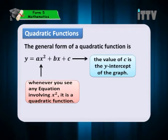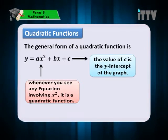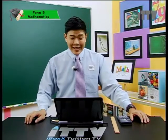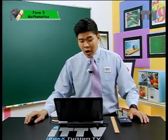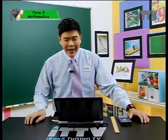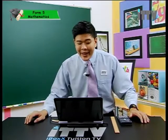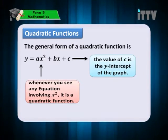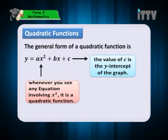The general form of a quadratic function has the highest power of x as 2. Now, what are a, b, and c? They are coefficients. Remember that in a quadratic function, a cannot be 0. The value of c is the y-intercept of the graph. Whenever you see any equation involving x-square, it is a quadratic function.